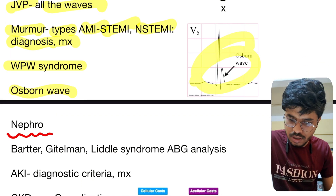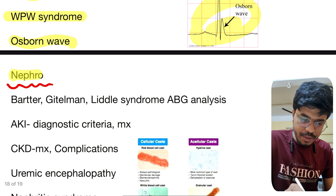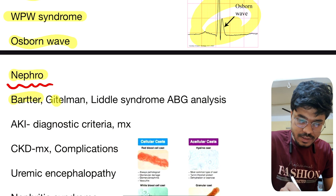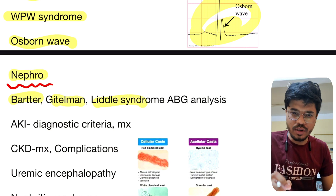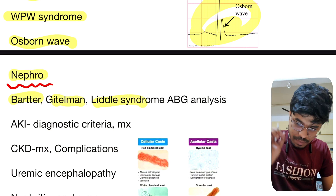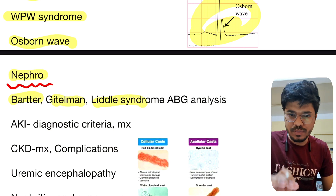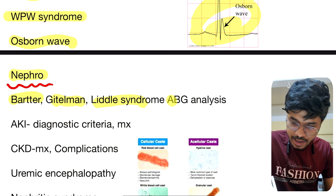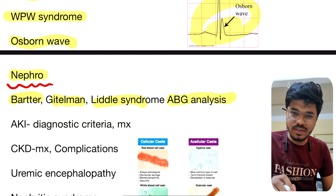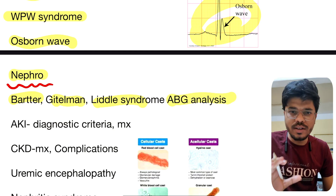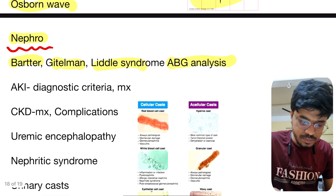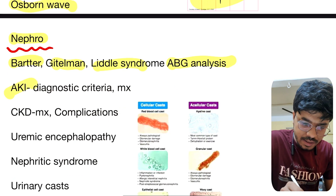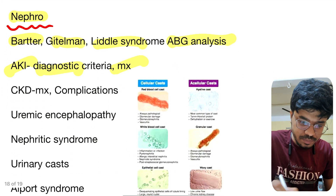This is the Osborne wave. In nephro: Bartter syndrome and Liddle syndrome — very important, one question will definitely come from this topic. ABG analysis — every year a question comes; you have to identify an ABG, its diagnosis criteria and management.